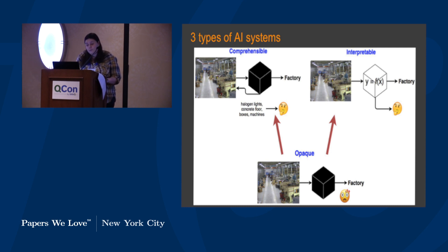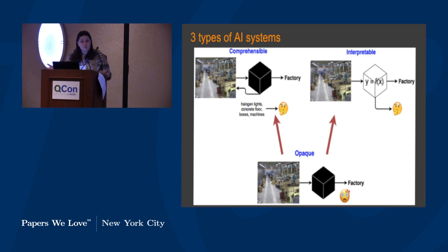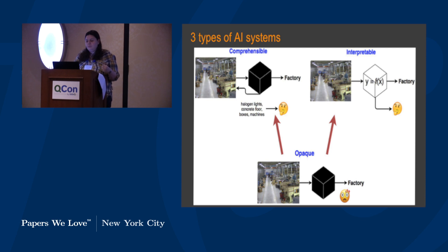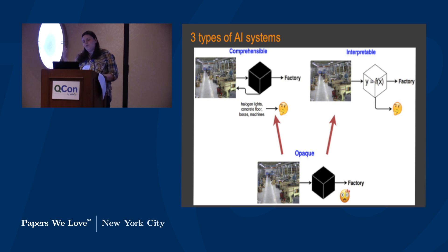The third kind is what they call comprehensible systems. These are kind of black box, but when they give you the answer — 'it's a factory' — they also give you a few hints as to why. In this case, they say: halogen lights, concrete floor, boxes, machines — individual items the model was able to detect in the picture. They leave it up to the user to deduce why having all these things in a picture means it is a factory.